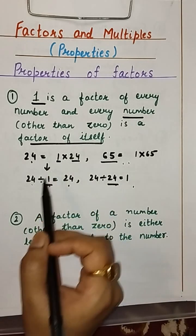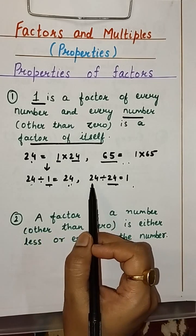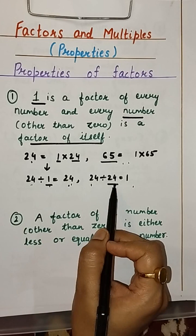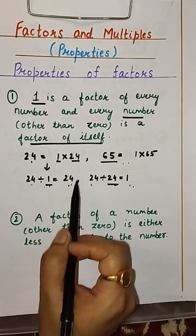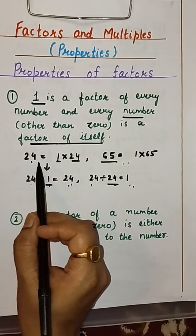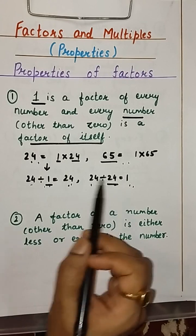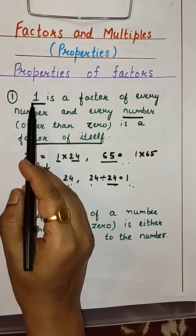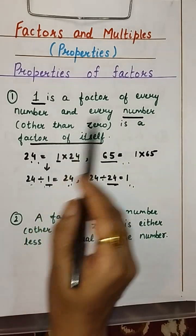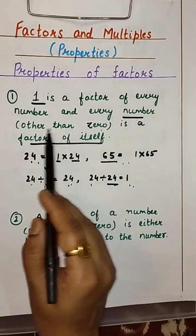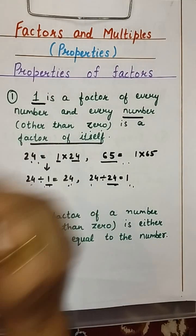From the division fact, 24 when divided by 1 gives 24, and when 24 is divided by 24, the answer is 1. In both cases, 1 and 24 are exact divisors of 24. So by definition of factors, 1 and 24 are factors. Every number other than 0 is also a factor of itself. This is the first property.